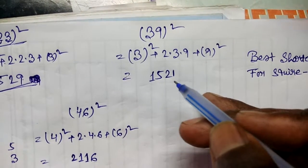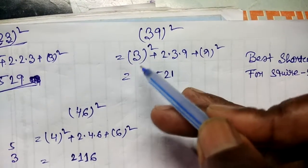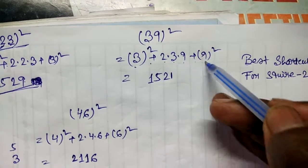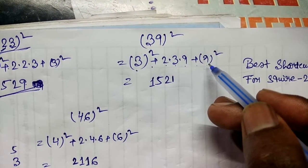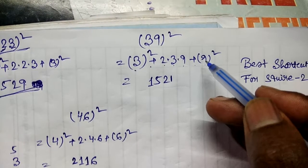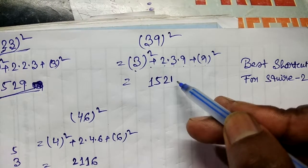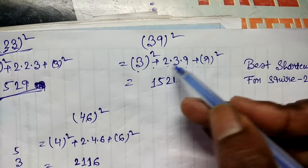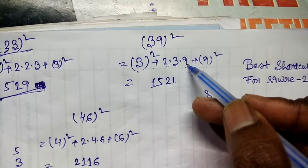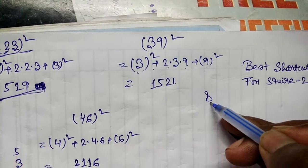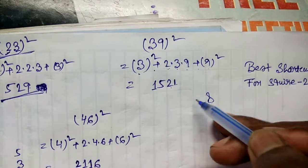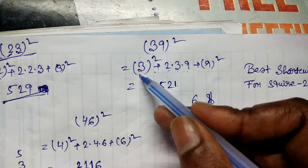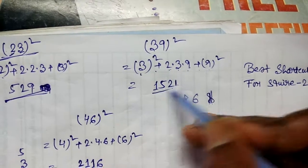Now try with another number: 39. Using a² + 2ab + b², starting from the right: 9² = 9×9 = 81, write 1 and carry 8. Then 2×3×9 = 54, plus 8 = 62, write 2 and carry 6. Then 3² = 9, plus 6 = 15.